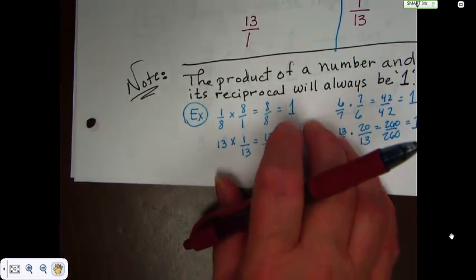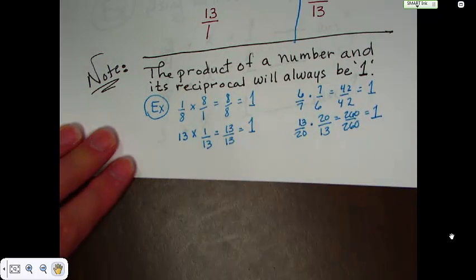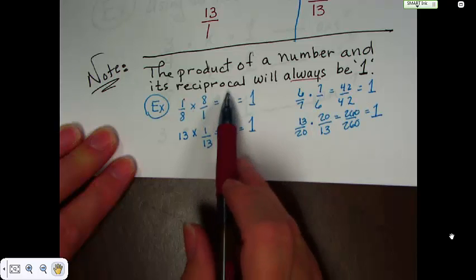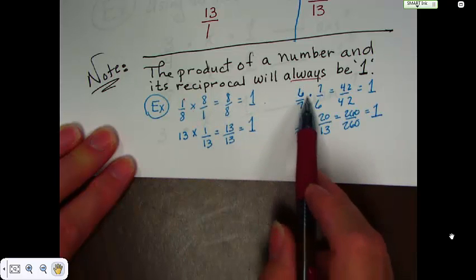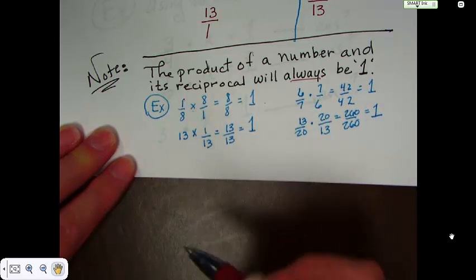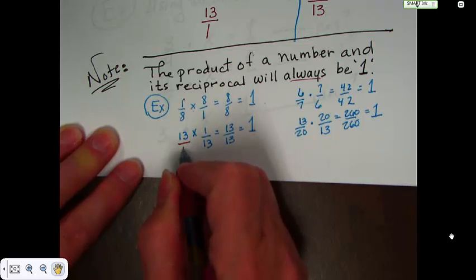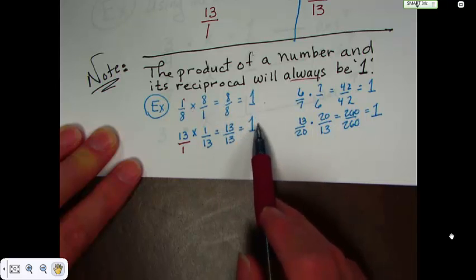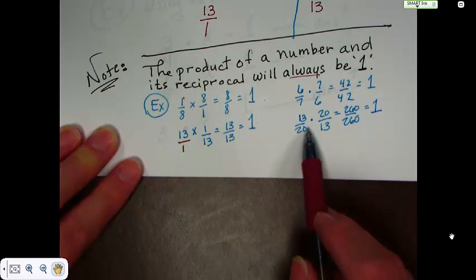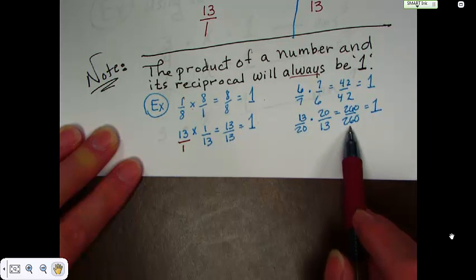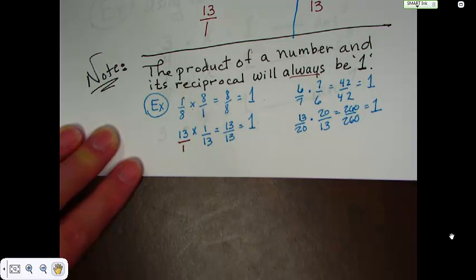Okay. Another little note that you might not know or maybe you do know. The product of a number and its reciprocal will always, always, always be 1. Always. So, 1 eighth times 8 over 1 equals 8 over 8 which is 1. 6 sevenths times 7 over 6 equals 42 over 42 which is 1. 13 and I guess I could put it over 1. Any whole number can be put over 1, remember. 13 over 1 times 1 over 13 equals 13 over 13 which equals 1. 13 over 20 times 20 over 13 equals 260 over 260 which is still 1.